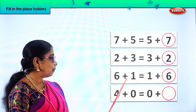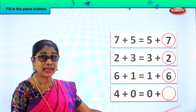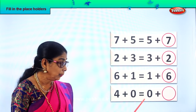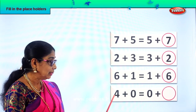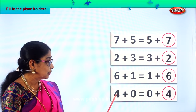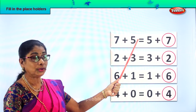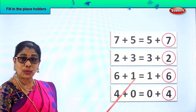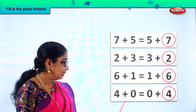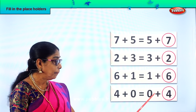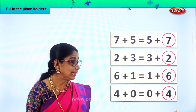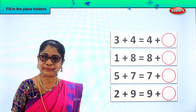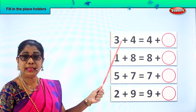Good. Six plus one is equal to one plus six. Now look at the last one: four plus zero. Four plus zero is equal to zero plus four. Now you are able to fill in easily the placeholders where the numbers were missing. Good, did you enjoy? Let's take another exercise.